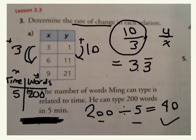You're looking at the change. If I put a 0 here, 0 minutes, 0 words, right? This is changing by 200. This is changing by 5. It's increasing by 200 for every 5 minutes. So for 10 minutes, how many words would he type? 400. Exactly. Good.